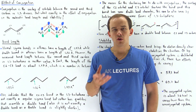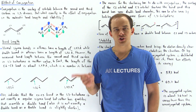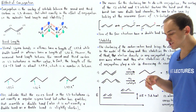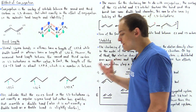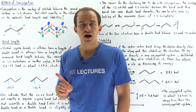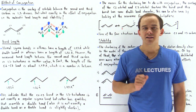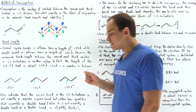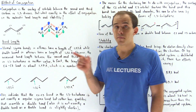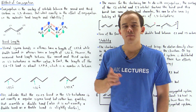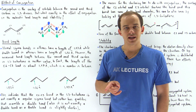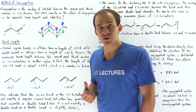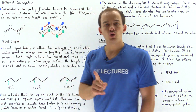Conjugation is the overlap of orbitals between the second and third carbon in 1,3-dienes. The questions we want to explore in this lecture are: what effects does conjugation have on molecules? More specifically, how does conjugation affect the stability and energy of molecules, and how does it affect the length of the bond between the second and third carbon in our 1,3-dienes? To answer these questions, let's take a look at an example — 1,3-butadiene.